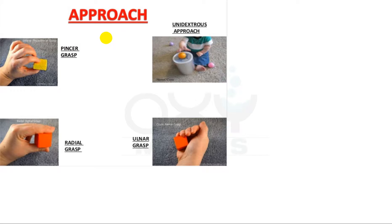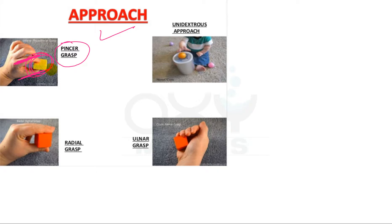Now coming to important pictures of milestones related to grasp. So what is pincer grasp? Pincer grasp means if a baby is holding something with his or her index finger and thumb — as you can see in this picture, the object is being held by the index finger and thumb — then it is pincer grasp.